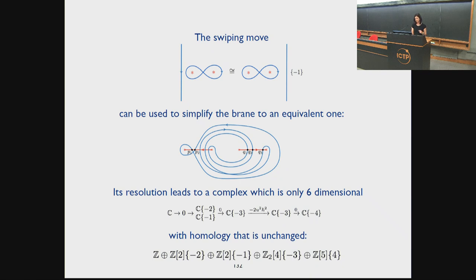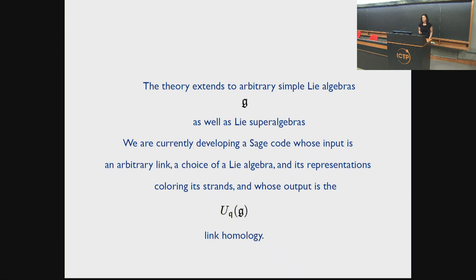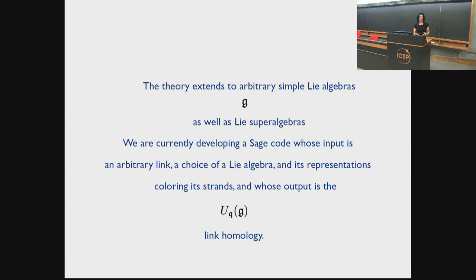The theory I described extends to arbitrary simple Lie algebras as well as Lie superalgebras. We are currently developing a Sage code whose input is an arbitrary link, a choice of Lie algebra and its representation — the color of the strands, right now the minuscule representation. Minuscule means that all weights are in the single orbit of the Weyl group — for example for SU(N), all fundamental representations, one for each node of the Dynkin diagram, are all minuscule. The output is the link homology. As part of the package, you also have means of just proving on the computer these slide moves that prove that your theory gives link invariants. By now we've done things — at least we'll tell you what's going on, it's a kind of state of the art. Okay, that's it. Thank you.